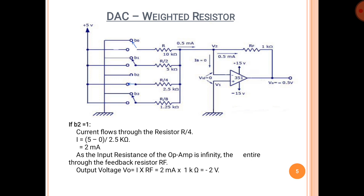Next case: if B2 = 1, the current flows through the R/4 resistance (2.5kΩ). The current value is (5 − 0) / 2.5kΩ = 2mA. As the input resistance of the op-amp is infinity, the entire current flows through the feedback resistor RF. The output voltage V0 = −2V when B2 = 1.